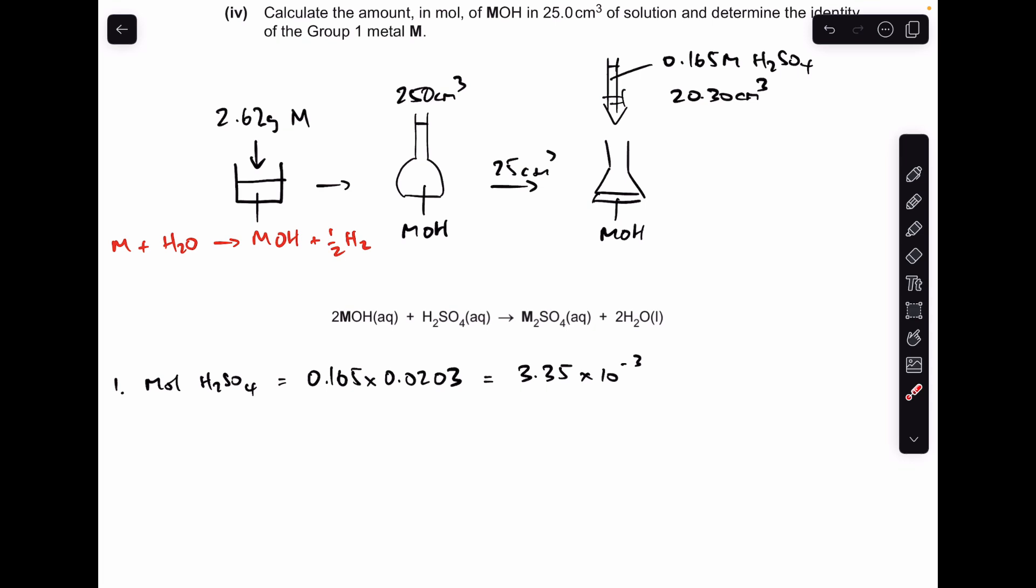Next thing we're going to do is establish the moles of MOH in the 25 cm³ portion used in the titration. We just apply that mole ratio, and we're going to double the moles of sulfuric acid, which comes out at 6.70 × 10⁻³. Next thing we need to do is scale up to how many moles of MOH must have been in the 250 cm³ volumetric flask.